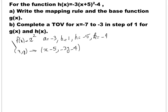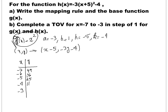The second part of the question says to complete a table of values for x equal to negative 7 to negative 3 in steps of 1 for g of x and h of x. Let's write the table of values: negative 7, negative 6, negative 5, negative 4, and negative 3. The base function is called g, so g of x equals x squared. Evaluating: negative 7 squared is 49, negative 6 squared is 36, negative 5 squared is 25, negative 4 squared is 16, and negative 3 squared is 9. These are the x and y coordinates of the base function.